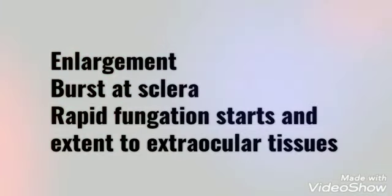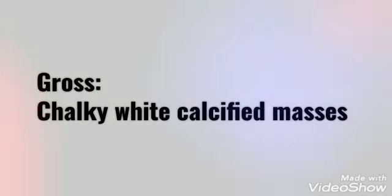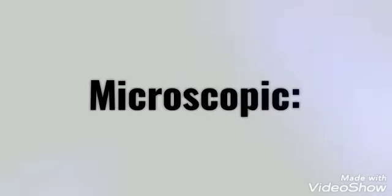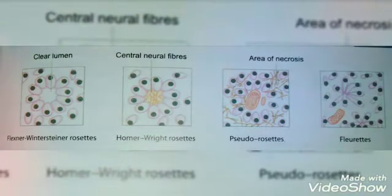These cells extend towards extraocular tissues and rapid fungation starts, as shown in this image. Now let's talk about pathology. Gross pathology gives chalky white calcified masses. Microscopically, it gives rosettes. There are three kinds of rosettes: Flexner-Wintersteiner rosettes, which are specific for retinoblastoma.